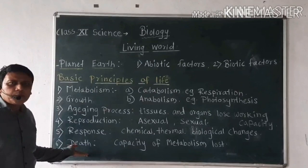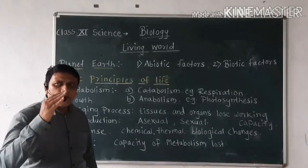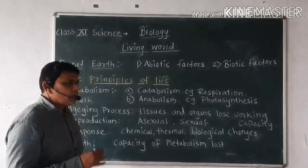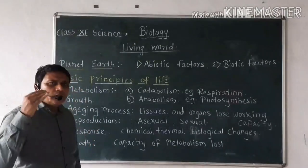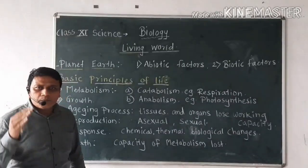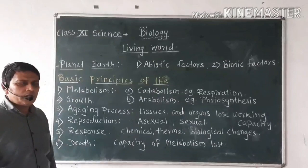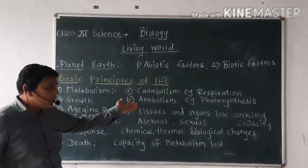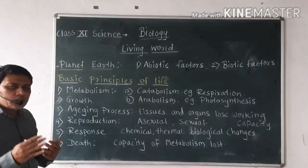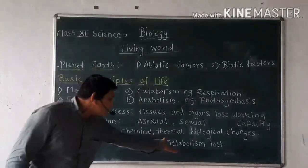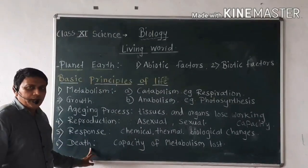The last basic principle of life is death. When an organism loses its metabolic capacity — that is, when the metabolism of an organism is lost — the organism dies. Metabolism includes different biological processes like catabolism and anabolism that occur in living organisms. So when these processes stop and metabolism is lost, the living organism dies.